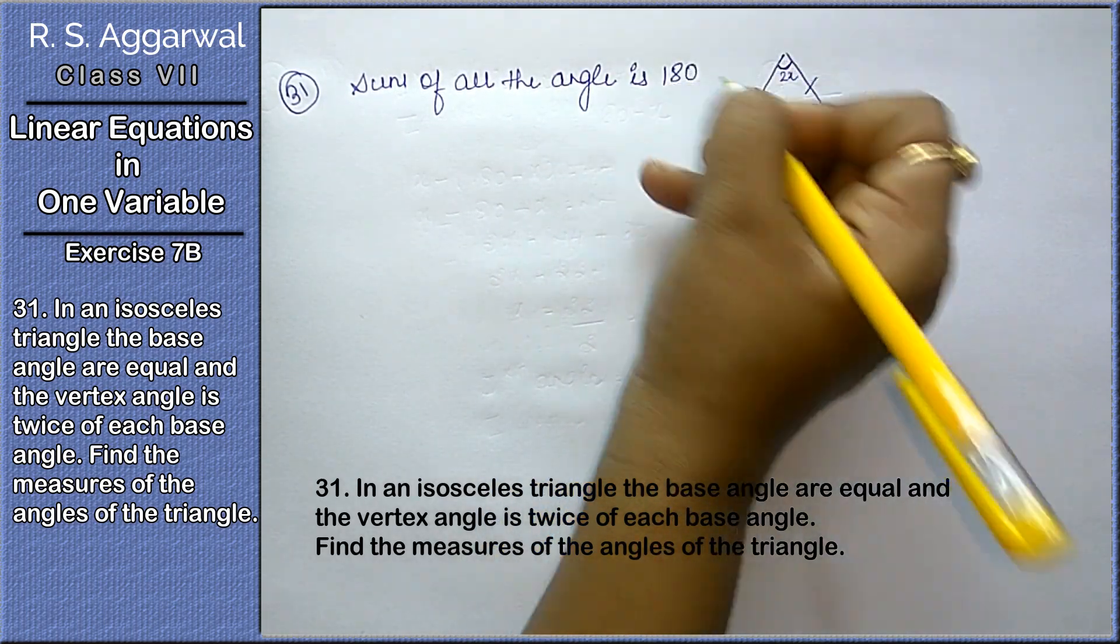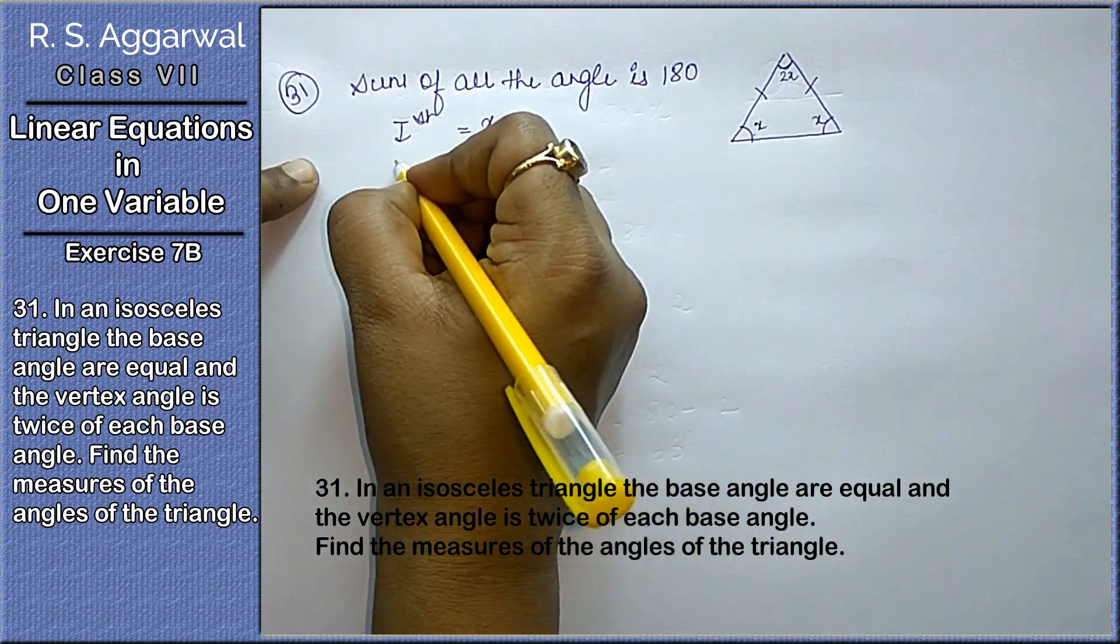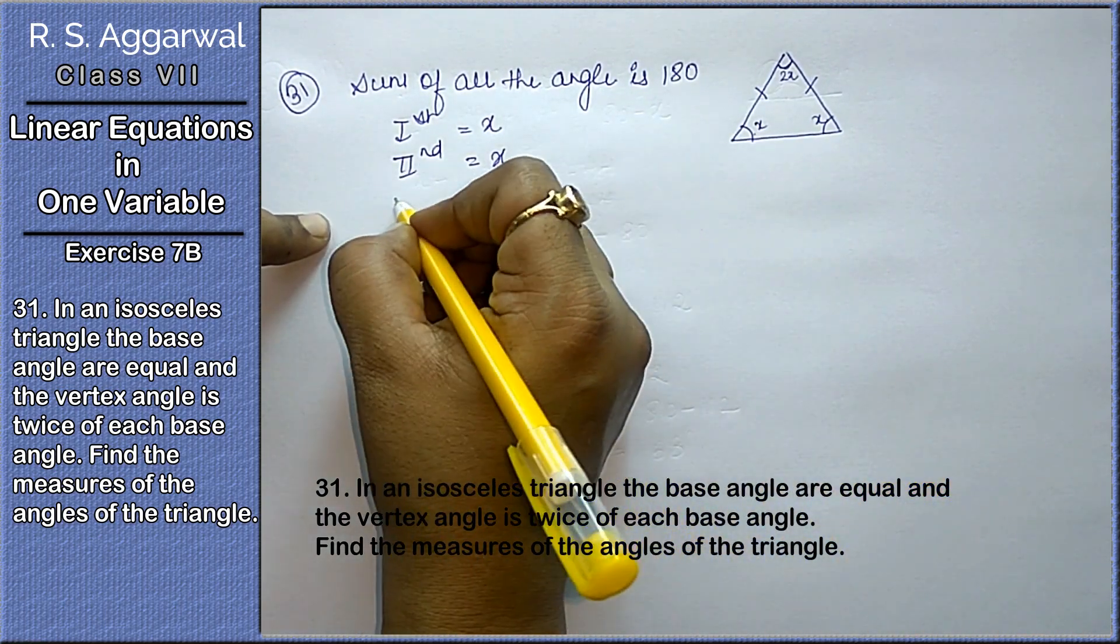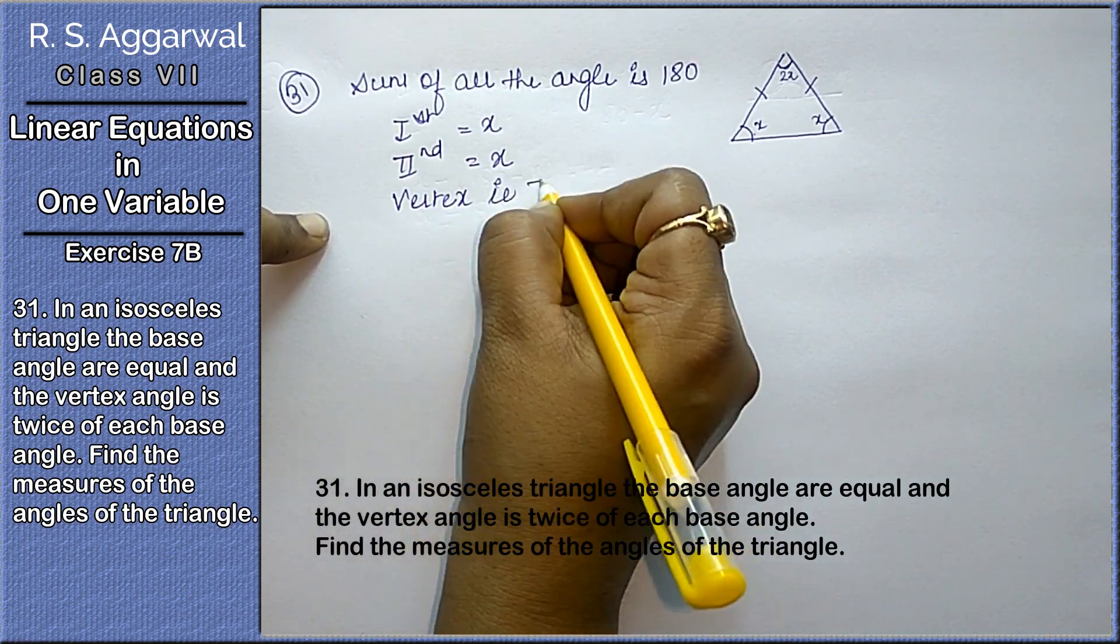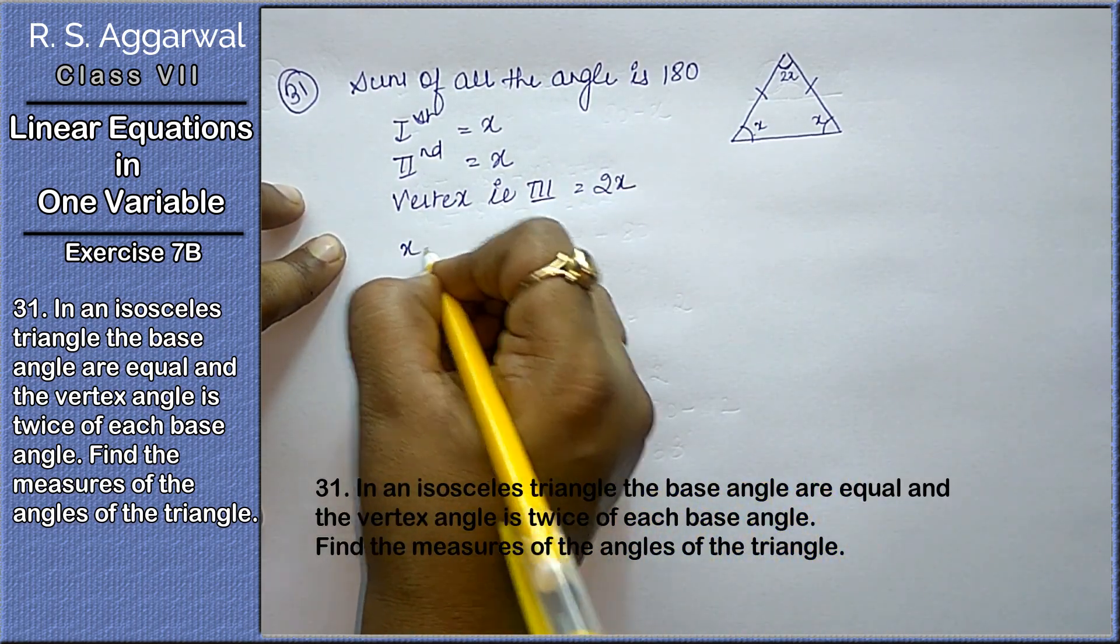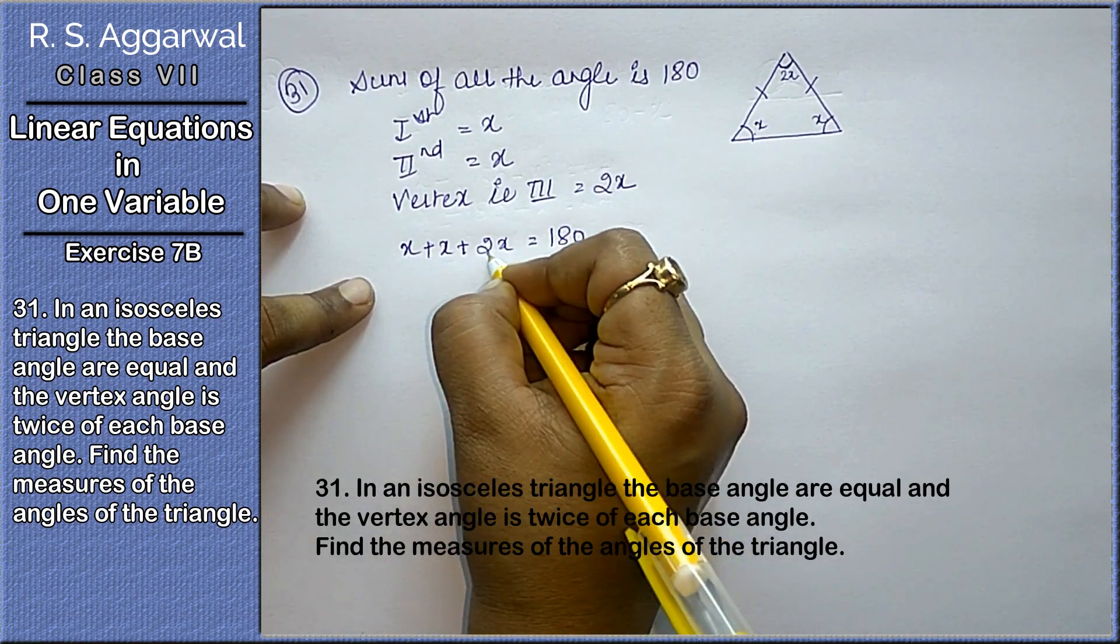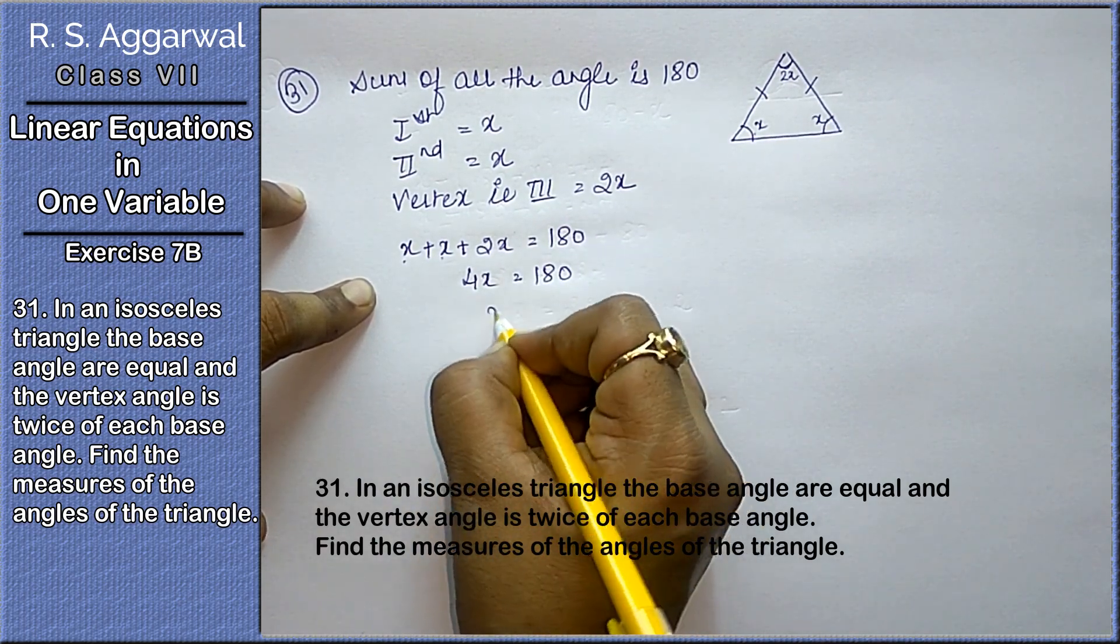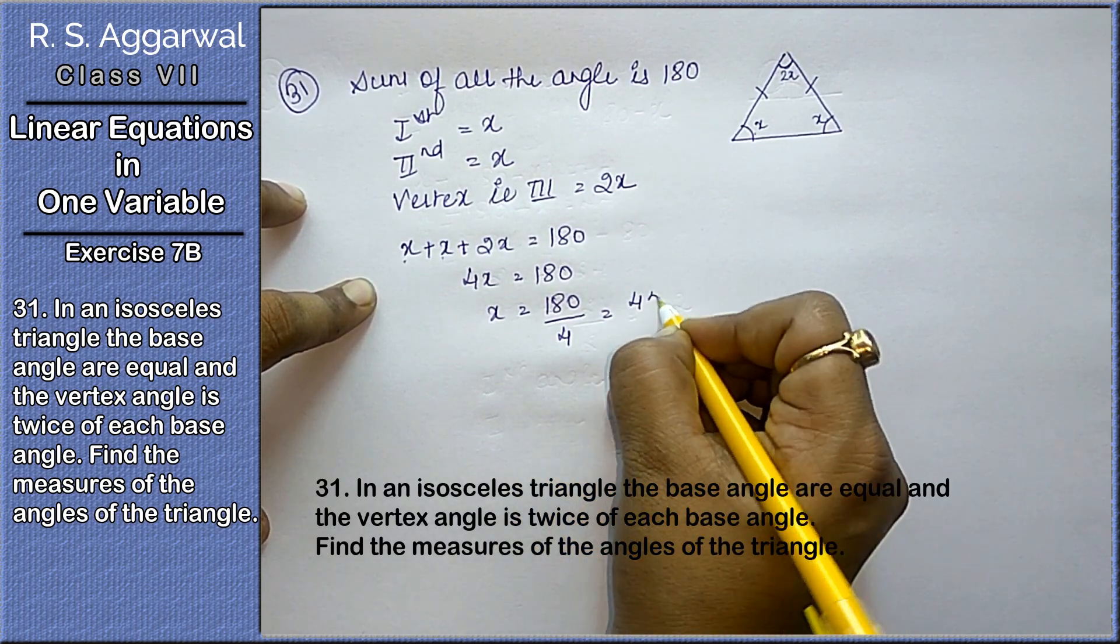We know that sum of all the angles is 180 degrees. Now if first angle is x, the second angle is also x because of isosceles triangle. And the vertex angle, the third angle will be twice of base angle, that is 2x. Sum of these three is 180 degrees.